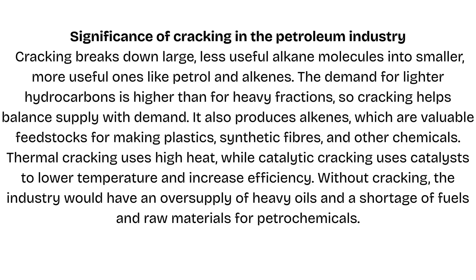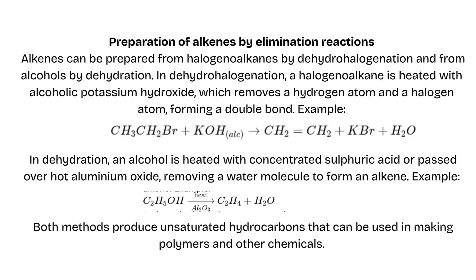Without cracking, the industry would have an oversupply of heavy oils and a shortage of fuels and raw materials for petrochemicals. Preparation of alkenes by elimination reactions: Alkenes can be prepared from halogenoalkanes by dehydrohalogenation and from alcohols by dehydration. In dehydrohalogenation, a halogenoalkane is heated with alcoholic potassium hydroxide, which removes a hydrogen atom and a halogen atom, forming a double bond. In dehydration, an alcohol is heated with concentrated sulfuric acid or passed over hot aluminum oxide, removing a water molecule to form an alkene. Both methods produce unsaturated hydrocarbons that can be used in making polymers and other chemicals.